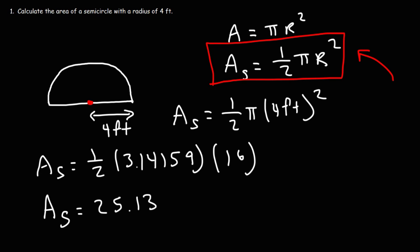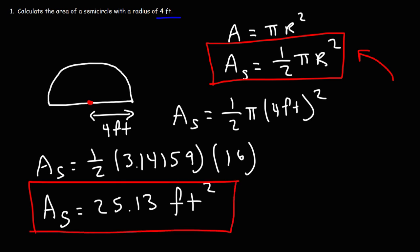Now what are the units for area in this problem? Area is always in square units. The radius is in feet, so the area in this example is going to be square feet — it's 25.13 square feet. That's how you calculate the area of a semicircle when given the radius.